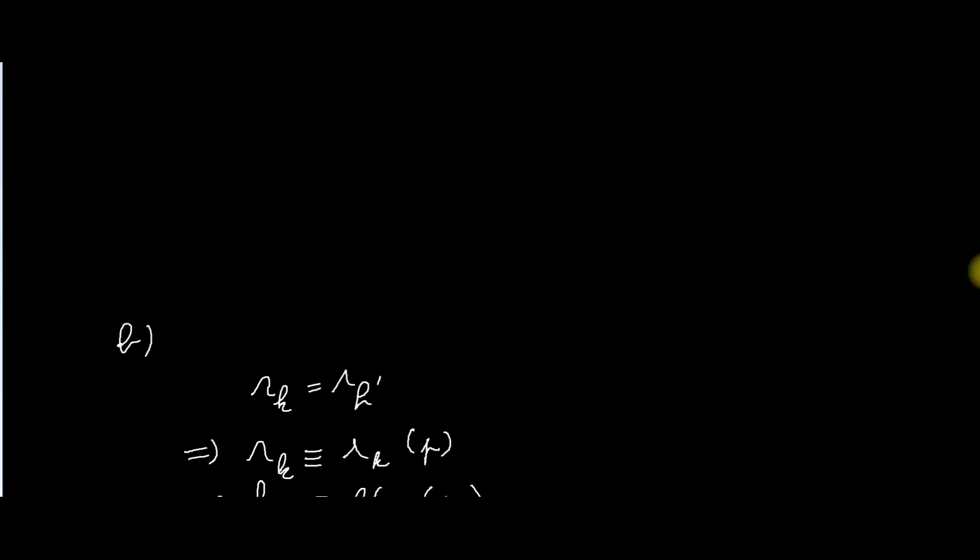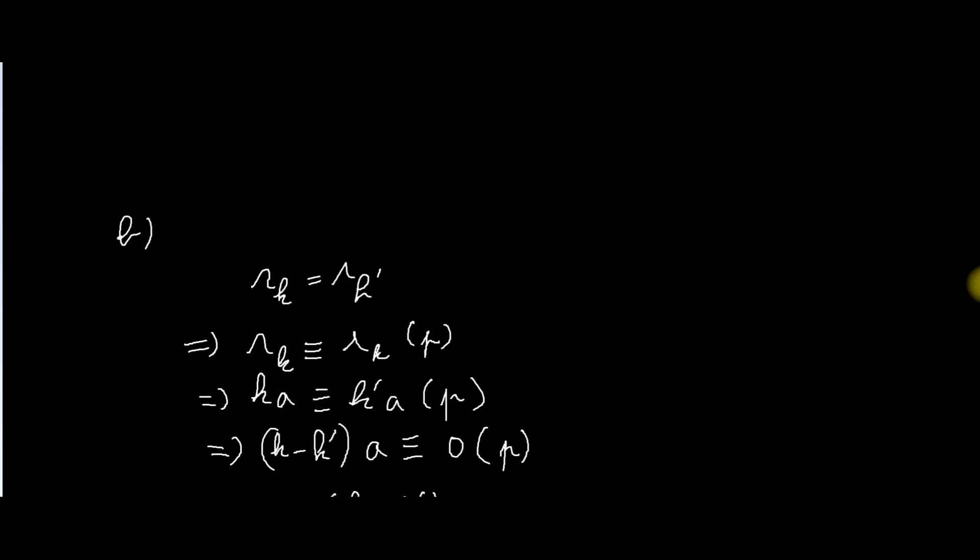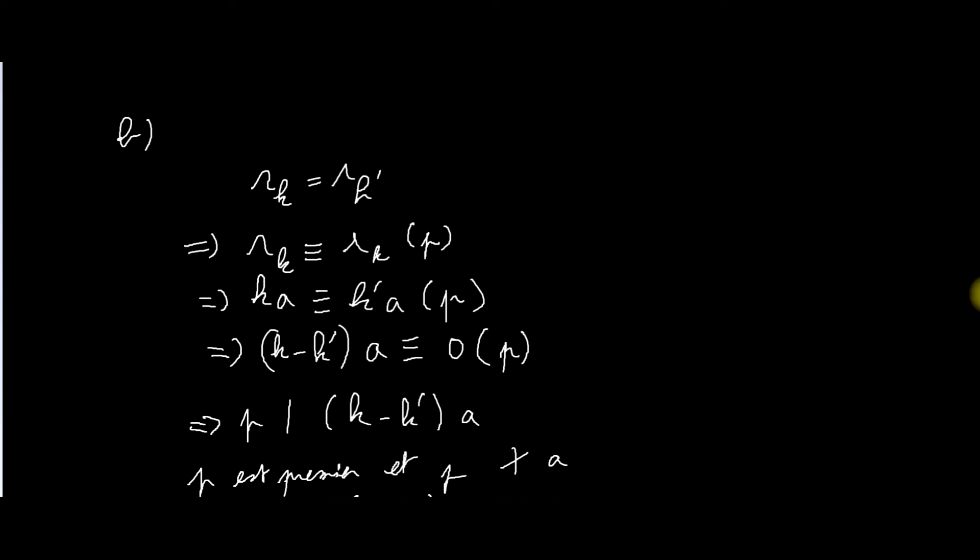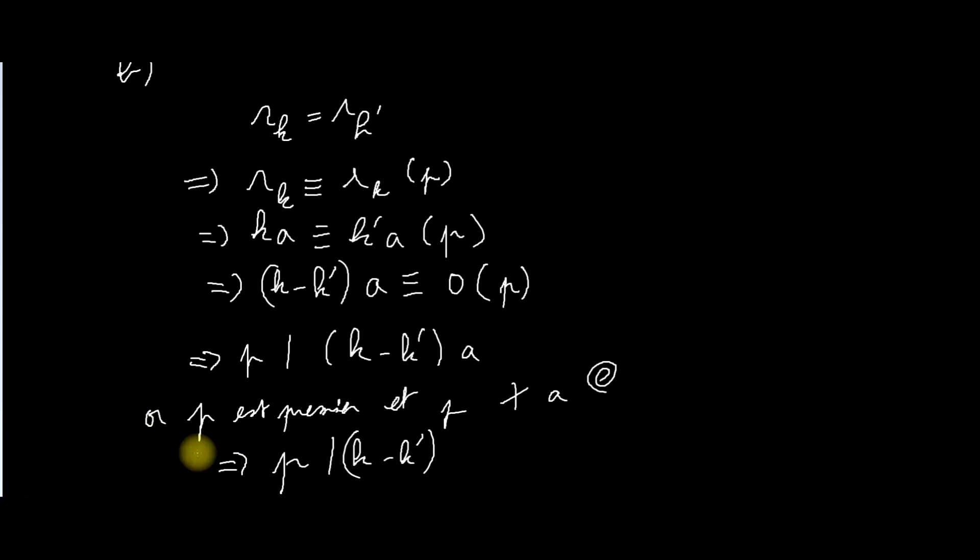Alors, on va supposer que RK est égal à RK'. Ça implique donc qu'ils sont congrués entre eux modulo P. Donc, que KA est congruent à K'A modulo P. Je soustrais KA de chaque côté. Ça donne que KA moins K'A est congruent à 0 modulo P. Donc, P divise KA moins K'A. P est premier, mais P ne divise pas A. Ça, c'est dans l'énoncé. Donc, P divise K moins K'.